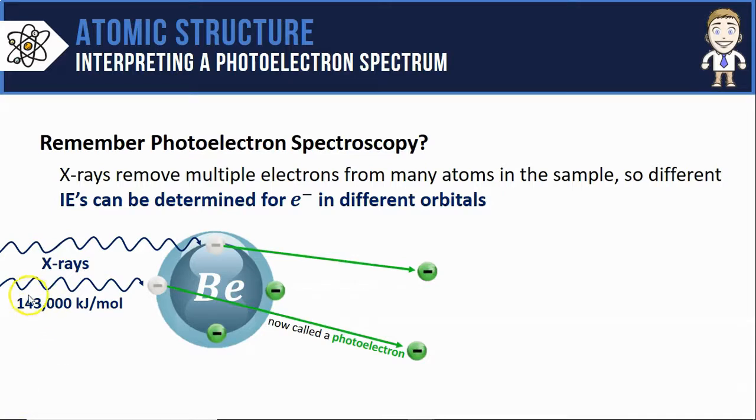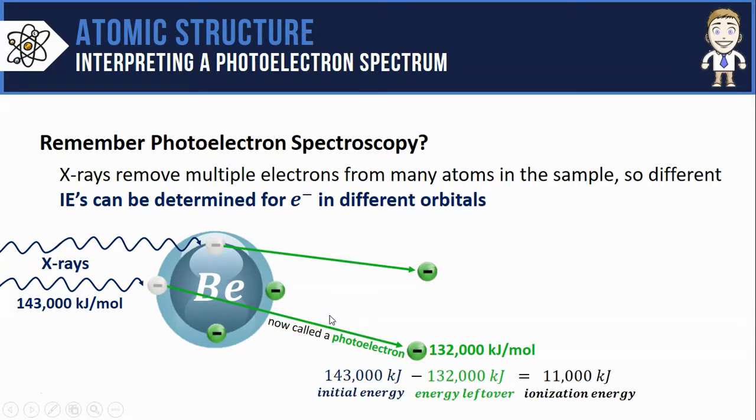Like in the model shown where we use x-rays with 143,000 kJ per mole to kick off this outermost electron, afterwards that electron leaves with only 132,000 kJ per mole, which means that 11,000 kJ of the original 143,000 must have been used to remove that electron and break its attraction to the nucleus. In other words, the ionization energy of that electron must be 11,000 kJ.